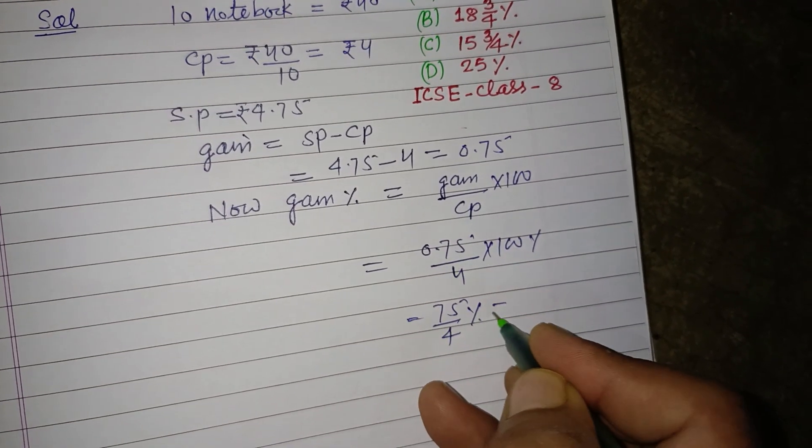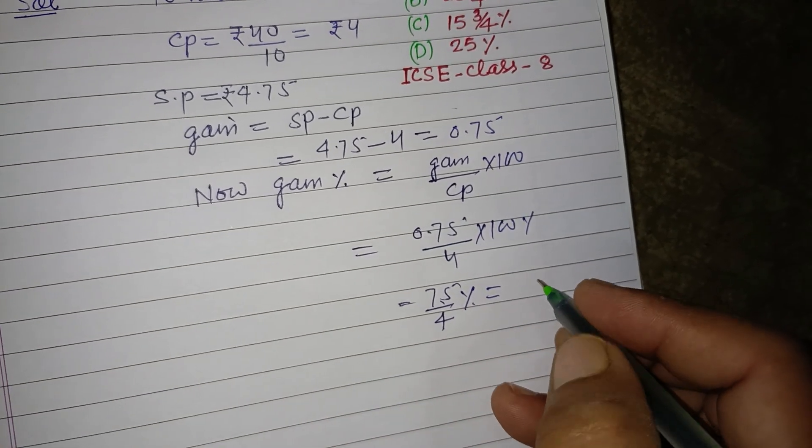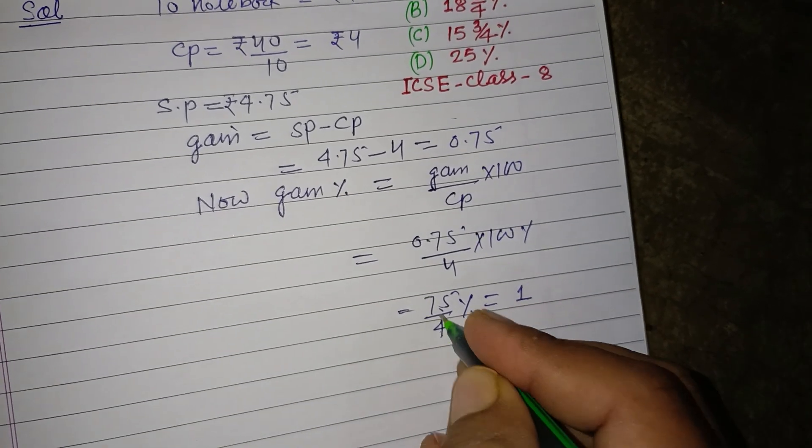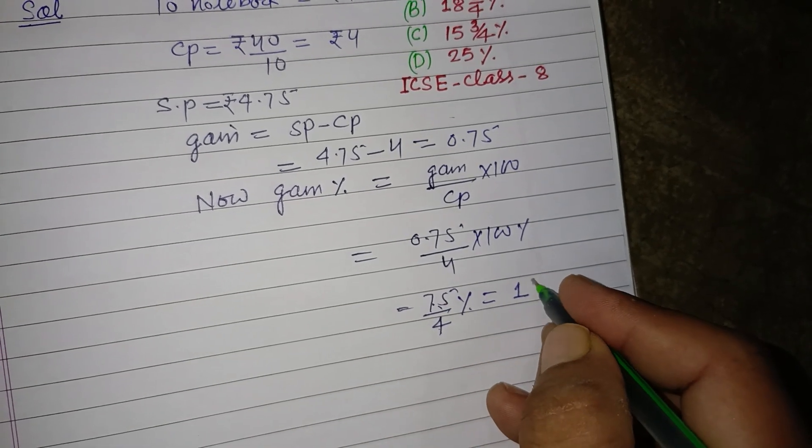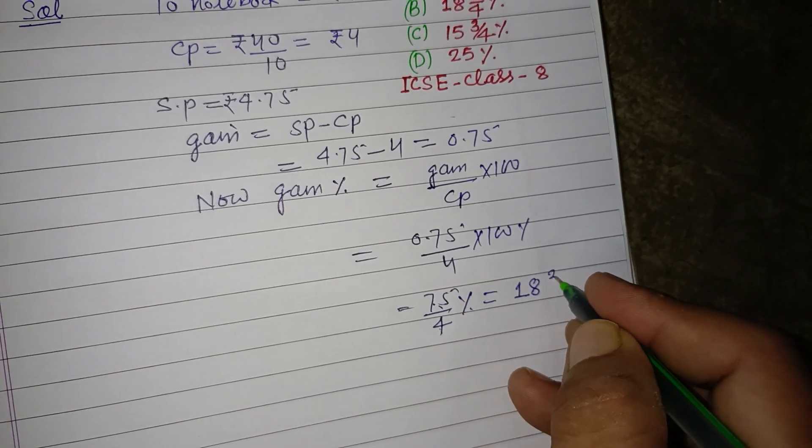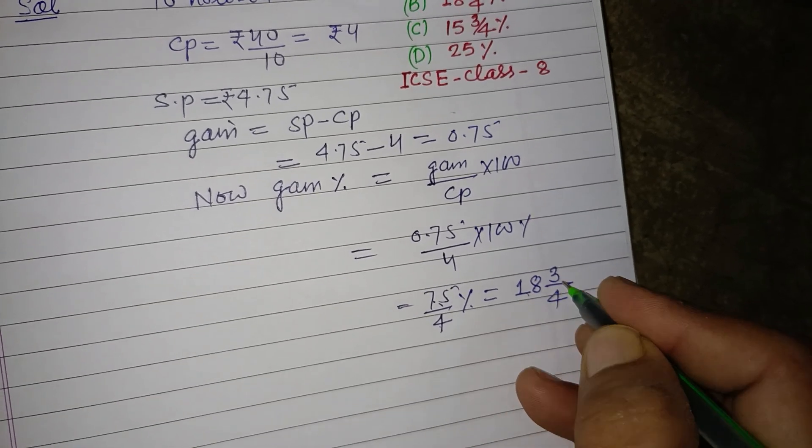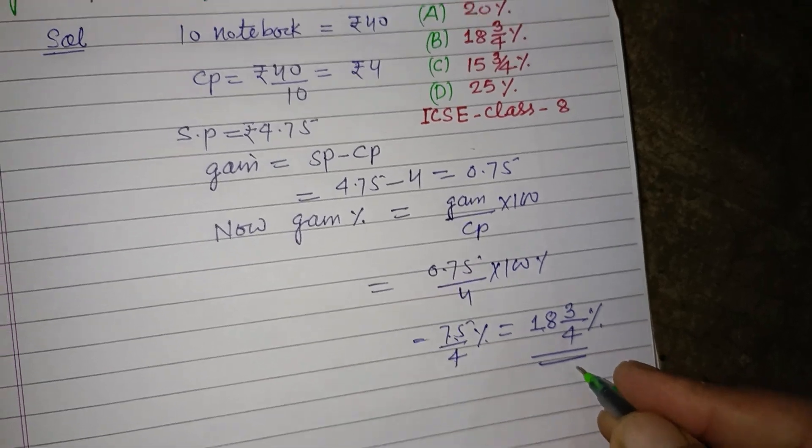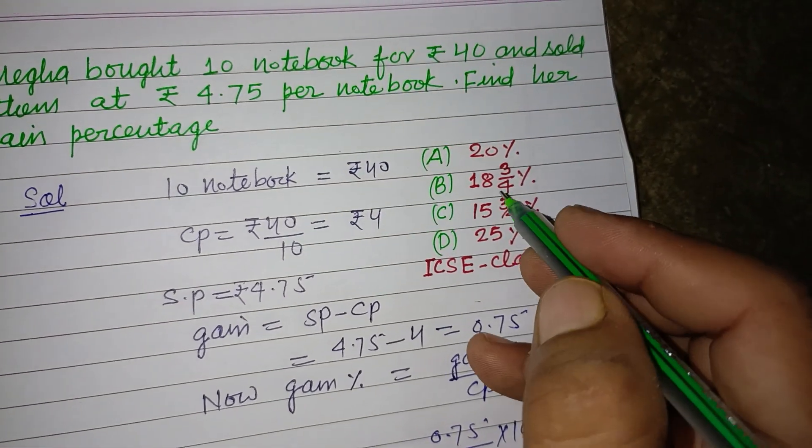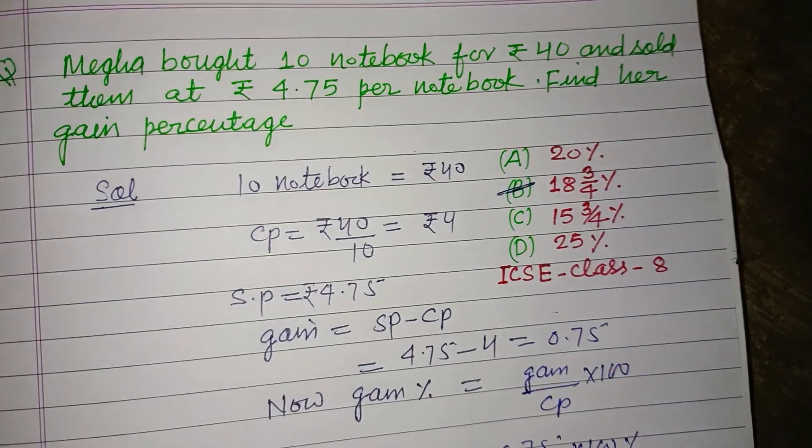Dividing this, 4 into 7 is 1, 4 remains. 35, 4 into 32, 3 remains. This gives us 18 and 3 by 4 percentage as the gain. So the answer to this question is B.